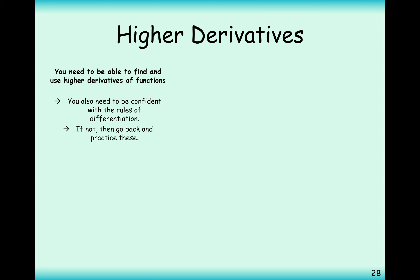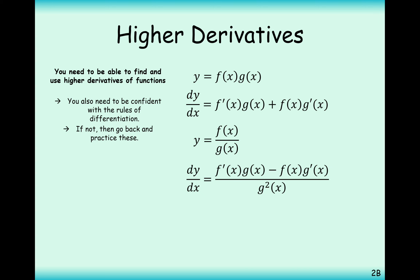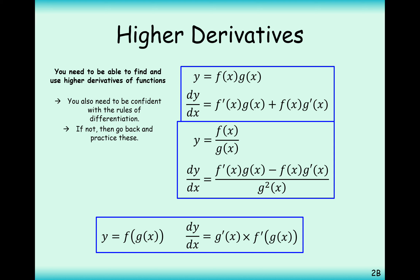We also need to be able to differentiate confidently using the following rules. The product rule is when two functions multiply together — differentiate one, keep the other the same, then add the vice versa. The quotient rule: differentiate the top, keep the bottom, minus keep the top differentiate the bottom, all over g squared. And the chain rule: differentiate the inside function first, then multiply by the derivative of the outside function with the inside still inside it. You need to know all of these confidently.